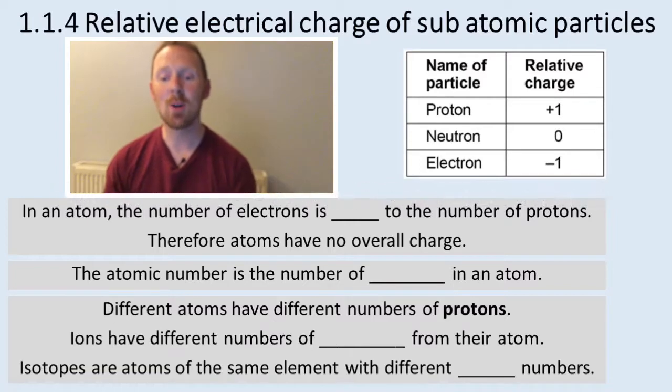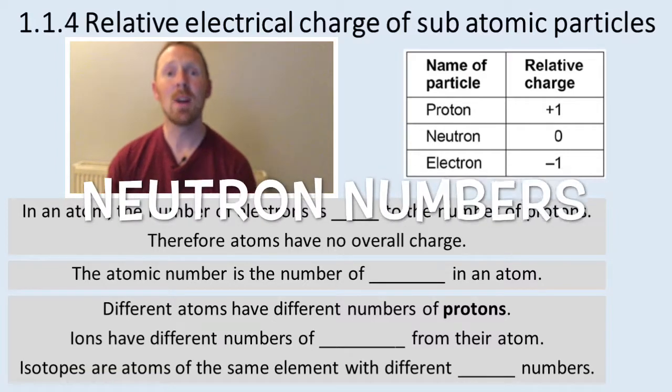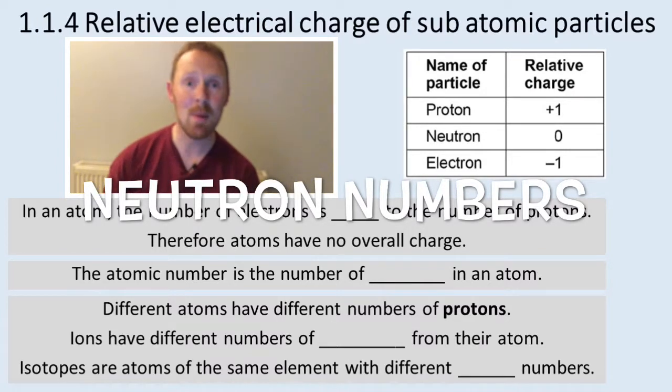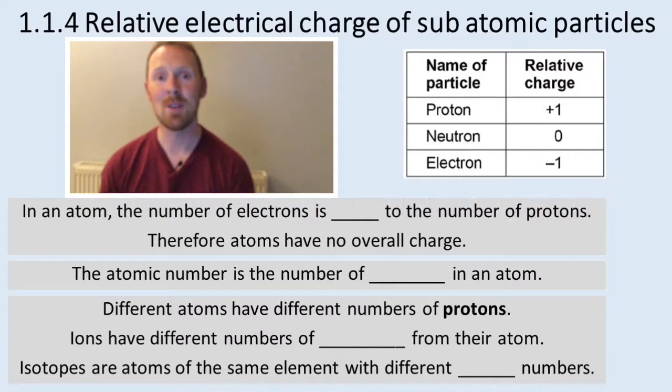And isotopes are atoms of the same element with different neutron numbers. So they have the same number of protons, but a different number of neutrons.